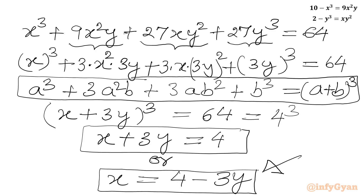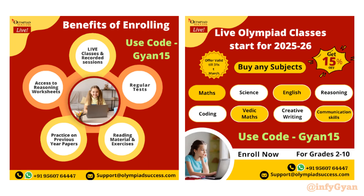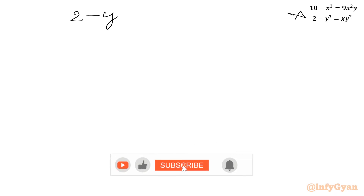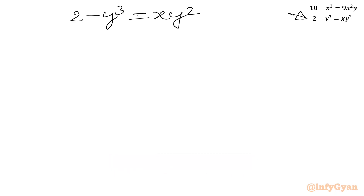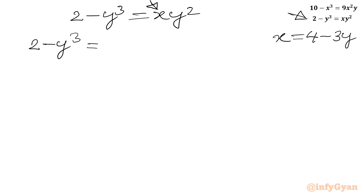Now I will use this expression for x in our second equation. The second equation is 2 minus y³ equals xy². Substituting x equals 4 minus 3y, we can write 2 minus y³ equals (4 minus 3y) times y².